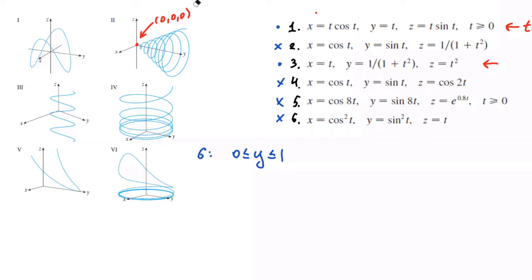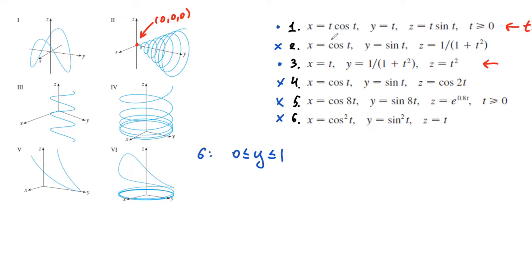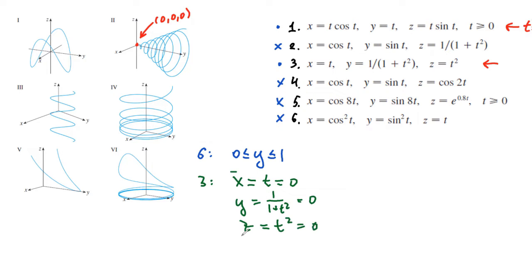What I want to do is make sure I cannot find such a t that makes x, y, and z all equal 0 simultaneously for the third equation. So I try to find t such that x = t = 0, y = 1/(1 + t²) = 0, and z = t² = 0. Solving this, t must equal 0, but plugging into the second equation gives 1/(1 + 0) = 1, not 0. So there is no such t — the only option was t = 0 and it doesn't work.